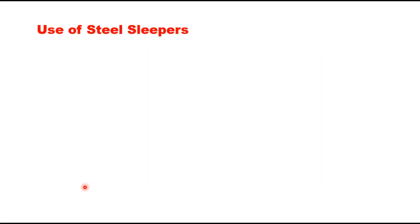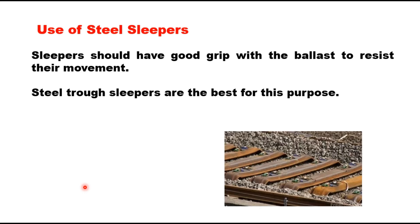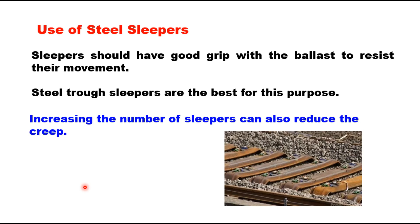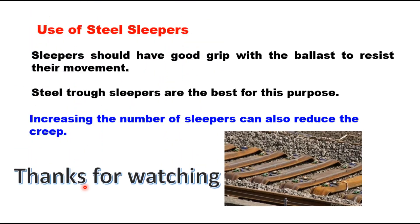The third remedial measure is use of steel sleepers. Sleepers in the track should be such that they do not allow rails to creep on them, and must also have a good grip with the ballast to resist movement of the sleepers. Steel trough sleepers are found to be the best for this purpose because of their shape and design. Increasing the number of sleepers can also reduce creep, as more sleepers provide more resistance to the movement of the rail. Thank you very much for watching this video.